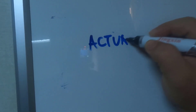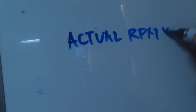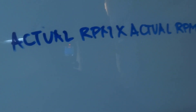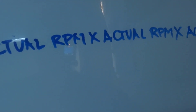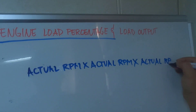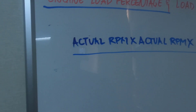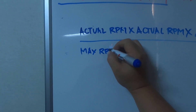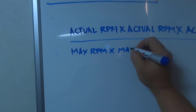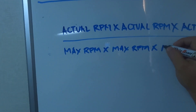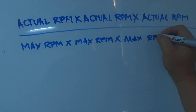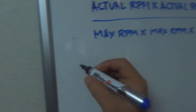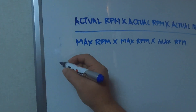Ang formula is: actual RPM × actual RPM × actual RPM, divided by max RPM × max RPM × max RPM — or also known as MCR (Maximum Continuous Rating) RPM. So, kunin muna natin yung actual. For example, meron kang actual RPM.